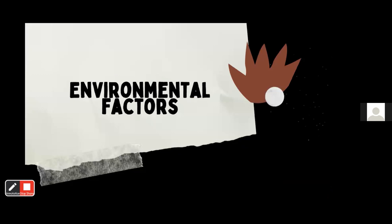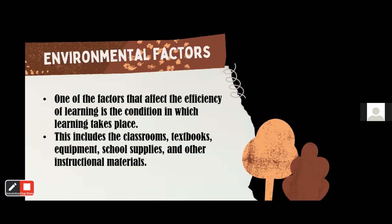The last factor is environmental factors. One of the factors that affects the efficiency of learning is the condition in which learning takes place. The school climate, facilities, and resources within the school have a huge influence on student learning achievement. This includes the classroom, the textbook, the equipment, school supplies, and other instructional materials. If students have a conducive learning environment that is safe and secure, and the facilities and instructional materials are provided, it will result in a positive influence on the student's academic performance.